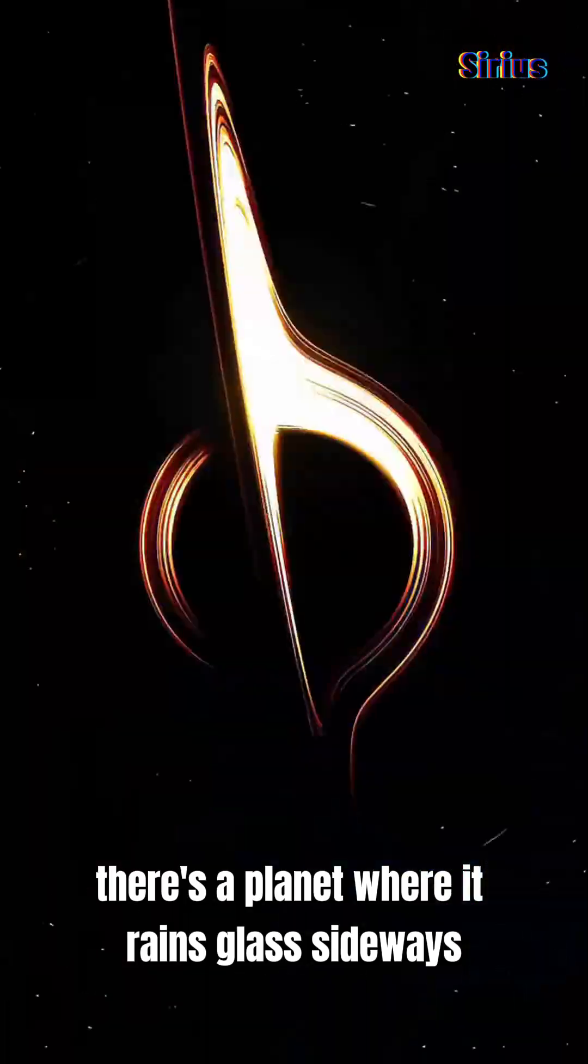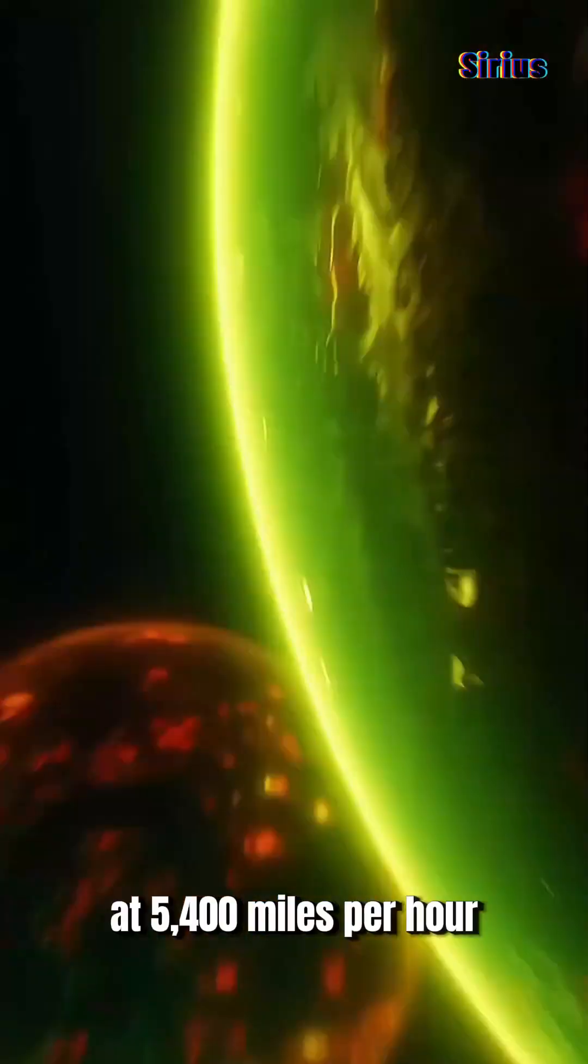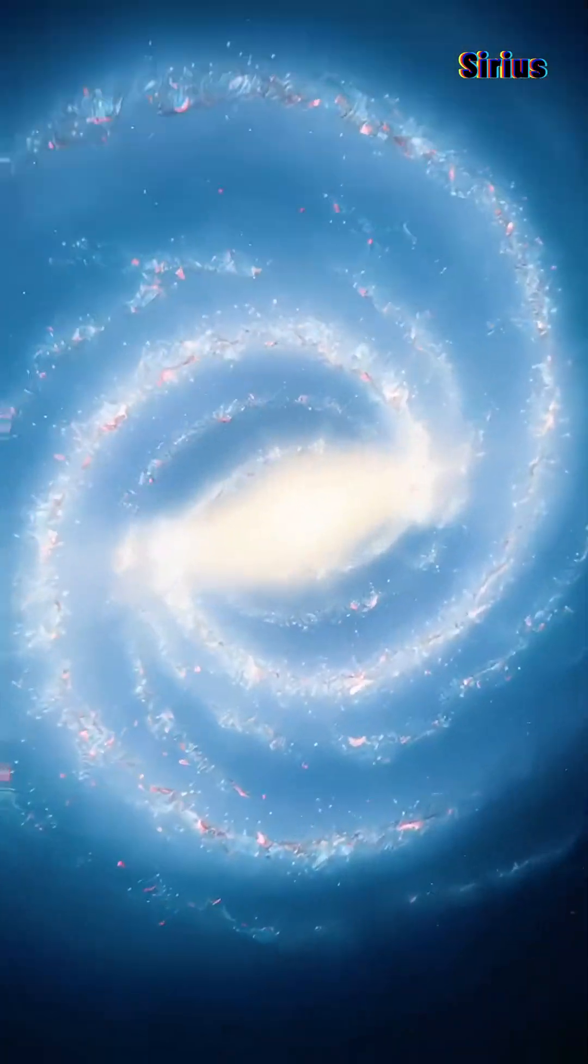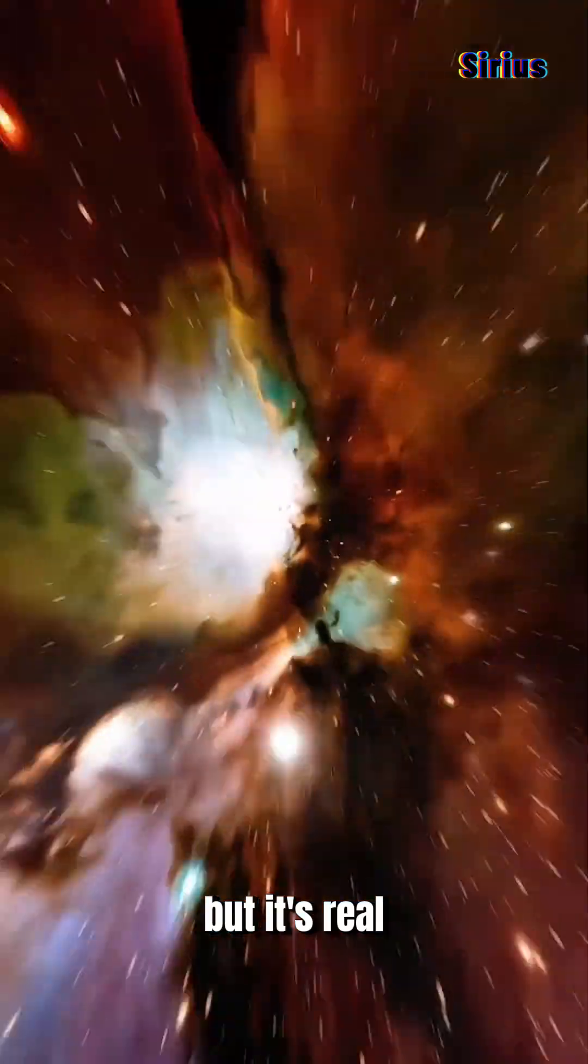What if I told you there's a planet where it rains glass sideways at 5,400 miles per hour? Sounds like a nightmare, right? But it's real.